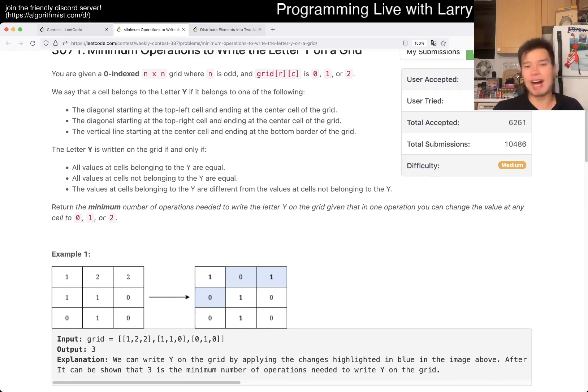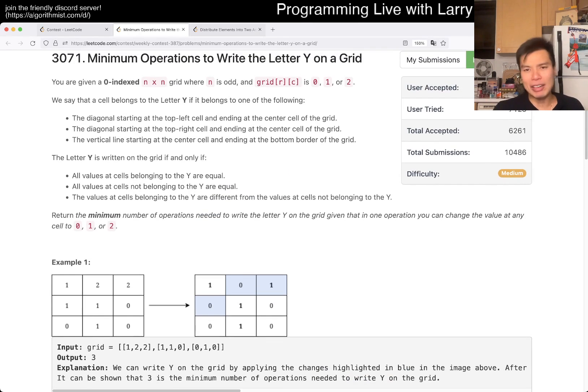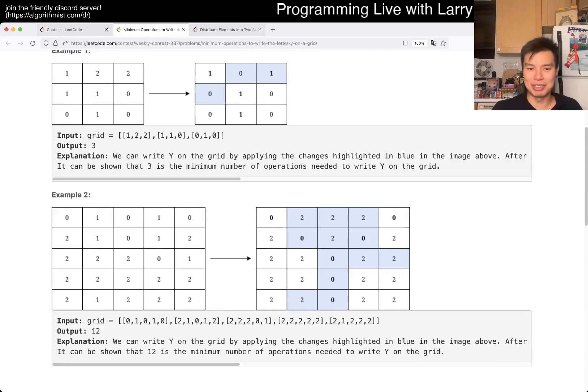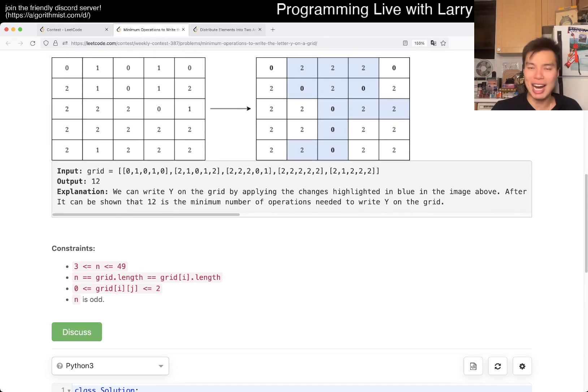And then the second part is how do you minimize it? I don't know if there are funky ways to do it, maybe there are. But the way that I did it was just brute force, because N is only 49, N squared is only 2,500-ish.